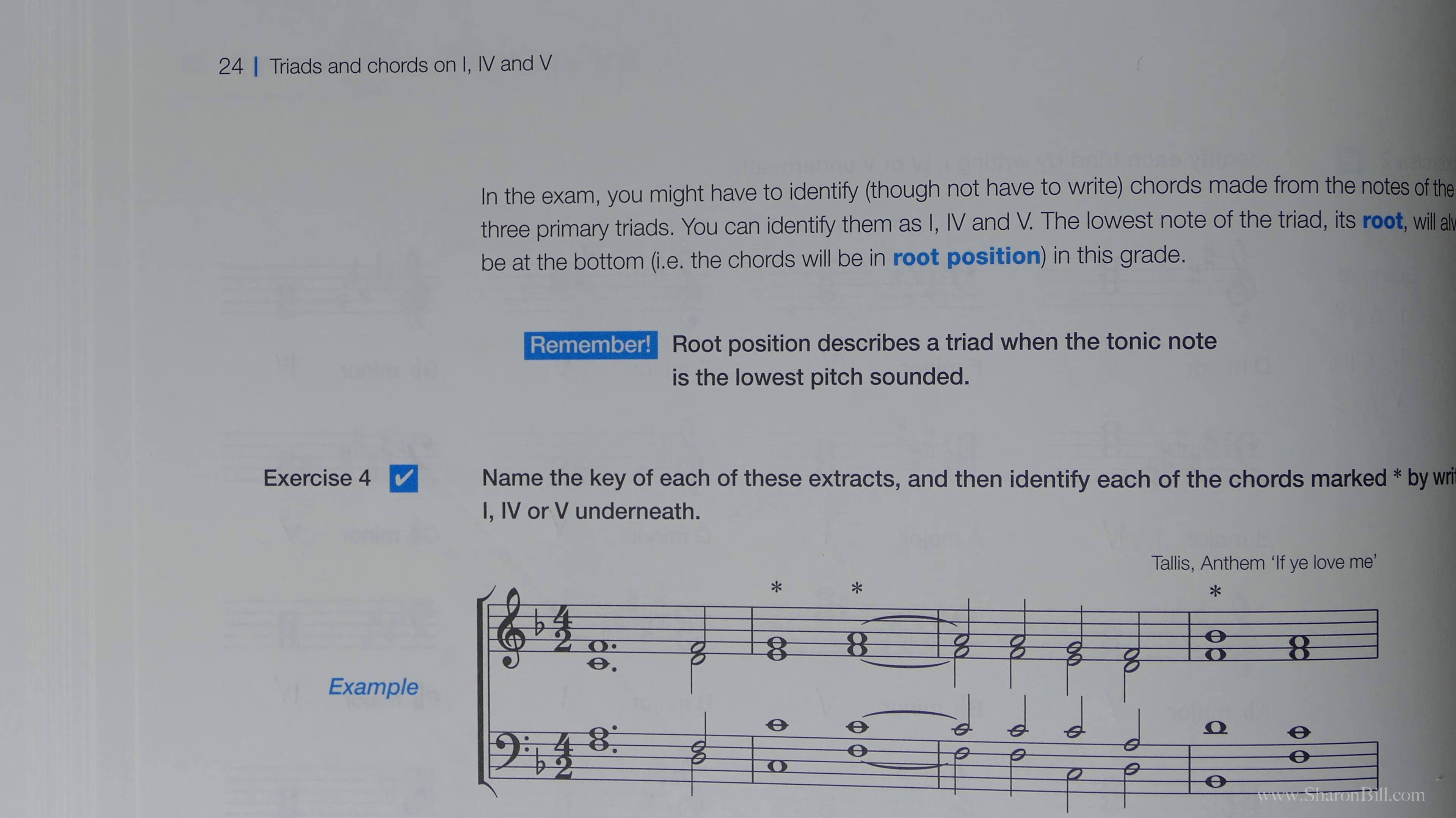And so here, they've given 1 for us. So let's have a look at this example that's done for us. So we're in the key of F major. We know that because we've got a key signature of B flats with no unnecessary unexplained accidentals. So we need to think of chords 1, 4 and 5.